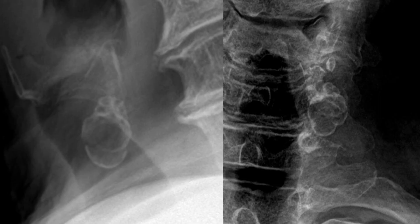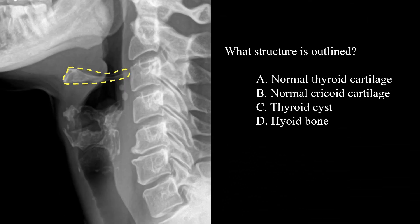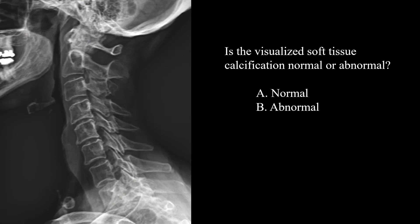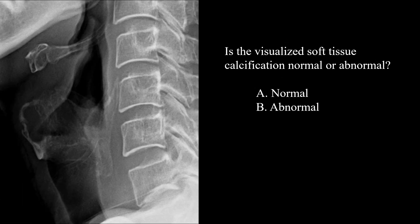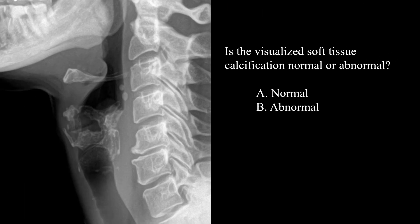We can zoom in for a closer look. Let's try a couple questions. What structure is outlined? That would be the hyoid bone. Is the visualized soft tissue calcification normal or abnormal? That would be an abnormal thyroid cyst. Is the visualized soft tissue calcification normal or abnormal? This is normal calcification. Is the visualized soft tissue calcification normal or abnormal? This is normal physiologic calcification.